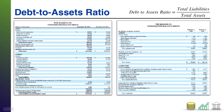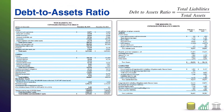Here I have the balance sheet of two different companies. The reason I have the balance sheet is because, as the name implies, the debt-to-asset ratio is going to involve us dividing debts by assets.